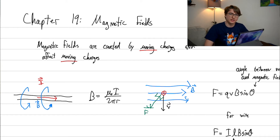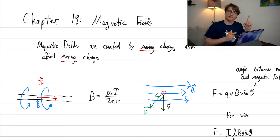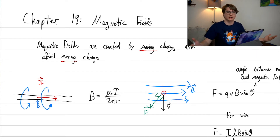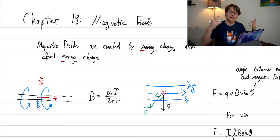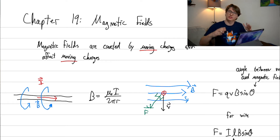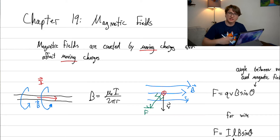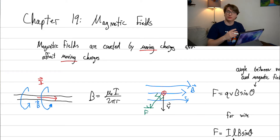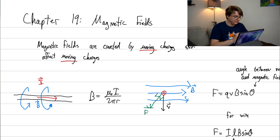Another weird thing about magnetic fields is that they don't exert forces in the same direction as the field — it's always perpendicular. Something that comes from that is that magnetic fields themselves can't directly do work or give energy directly, although you can store energy in magnetic fields. There's a lot of weird directionality we're going to have to work through to really understand how they work.